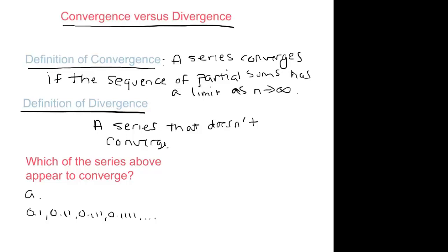Now is this list approaching anything? Do you think if you think about it for a minute, it seems like in the long run this is just going to become point one with an infinite number of ones, which is just point one repeating. So I think we would say that this looks like it's going to converge.